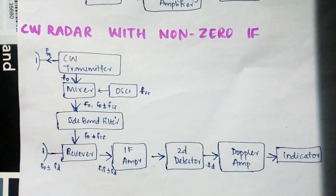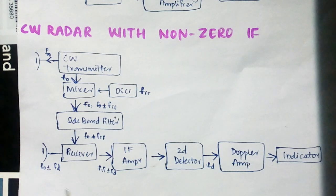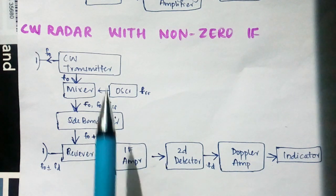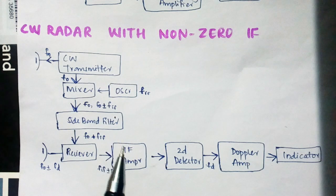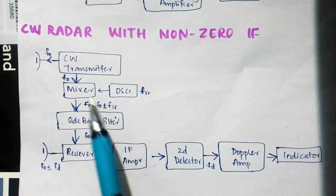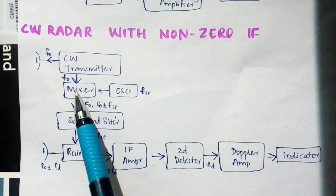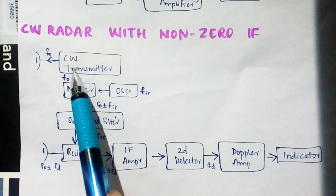In the receiving section we have a receiver which compares the received signal f0 plus or minus fd with the transmitting signal with an intermediate frequency. Since we are using IF, we have a mixer here which uses f0.